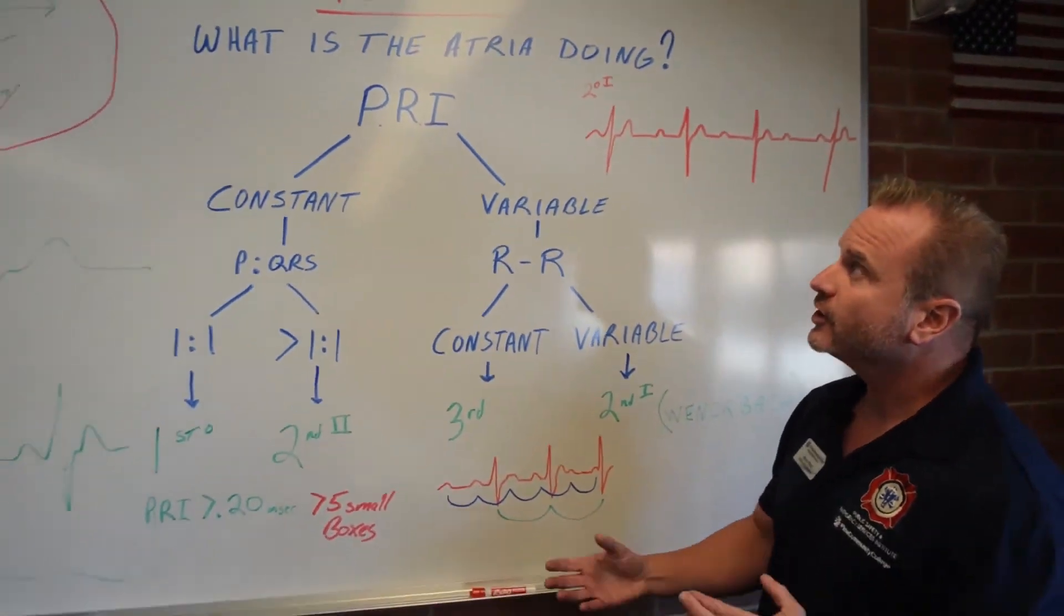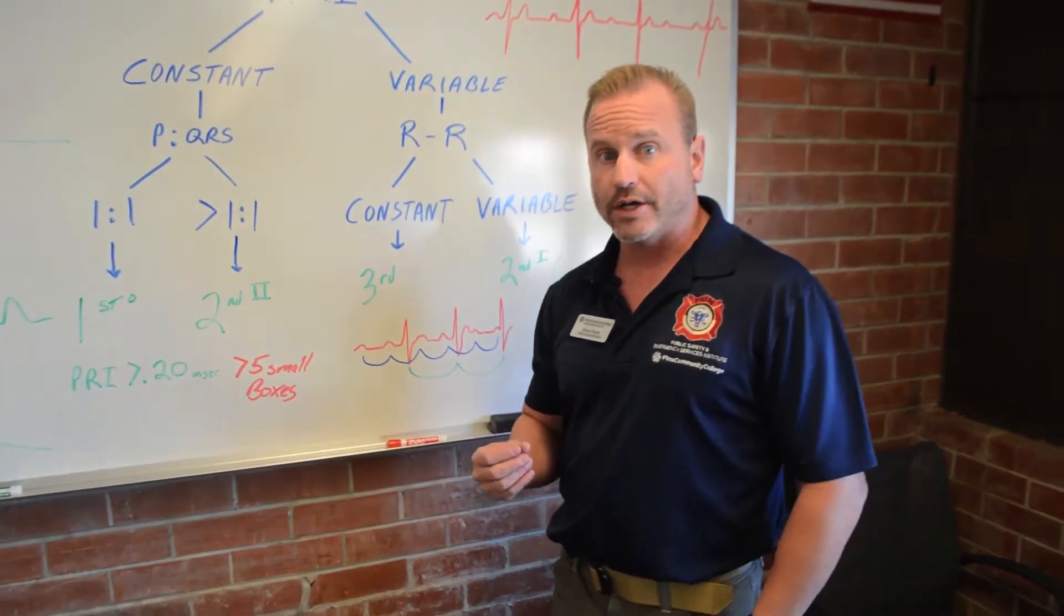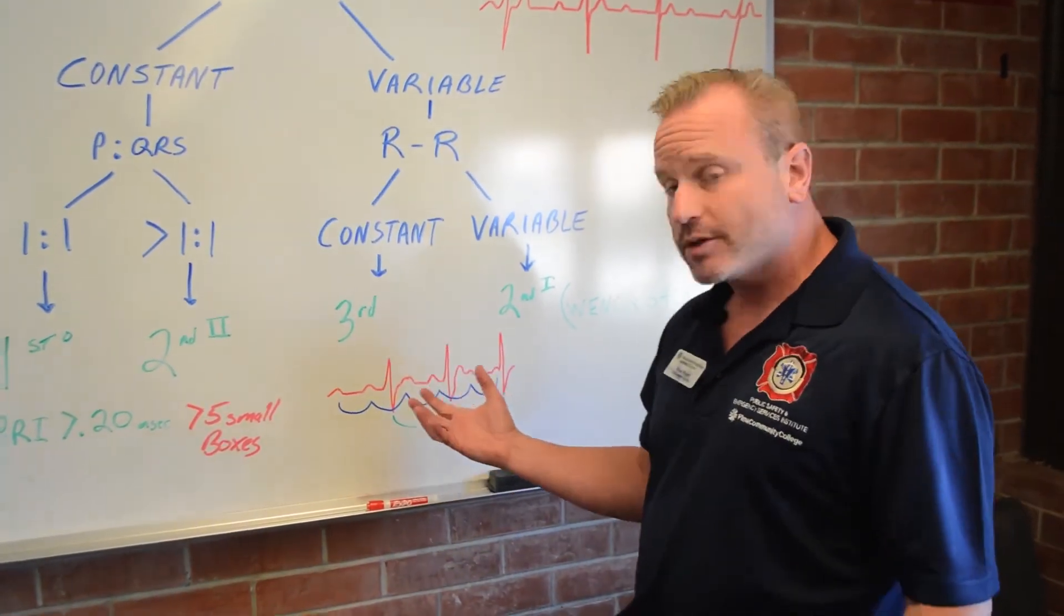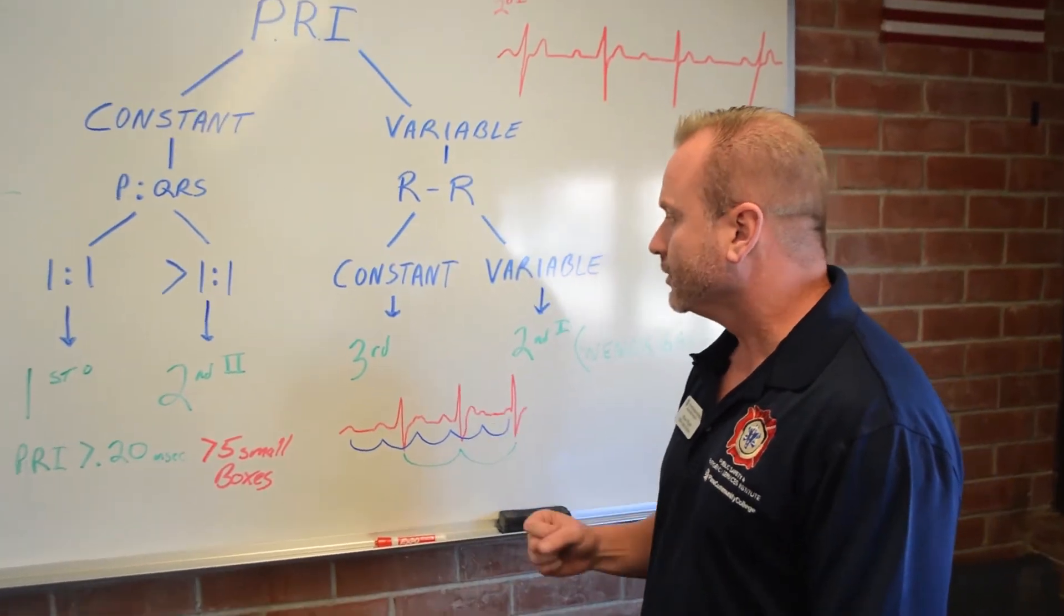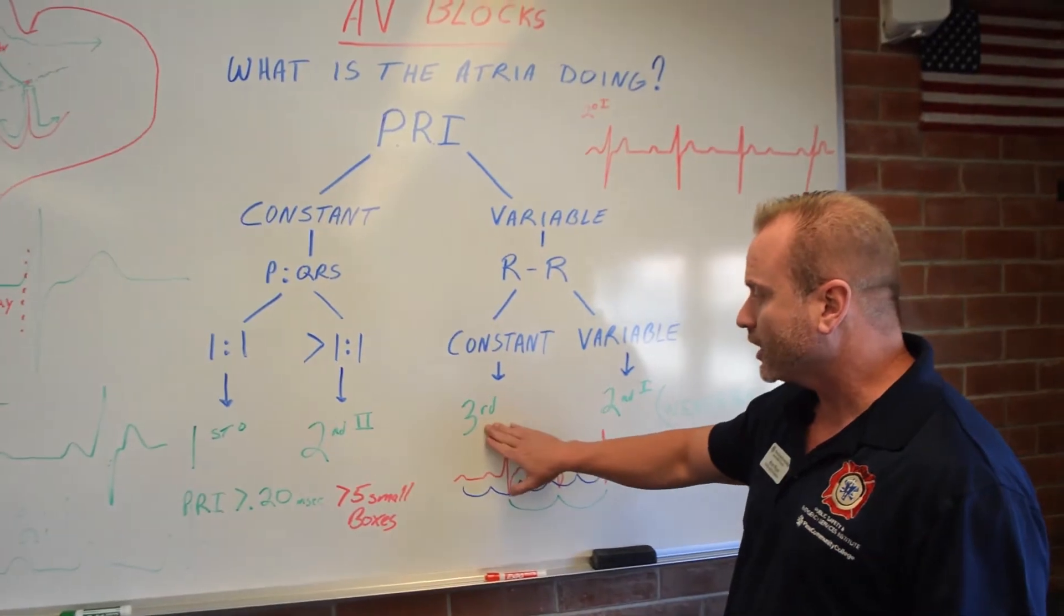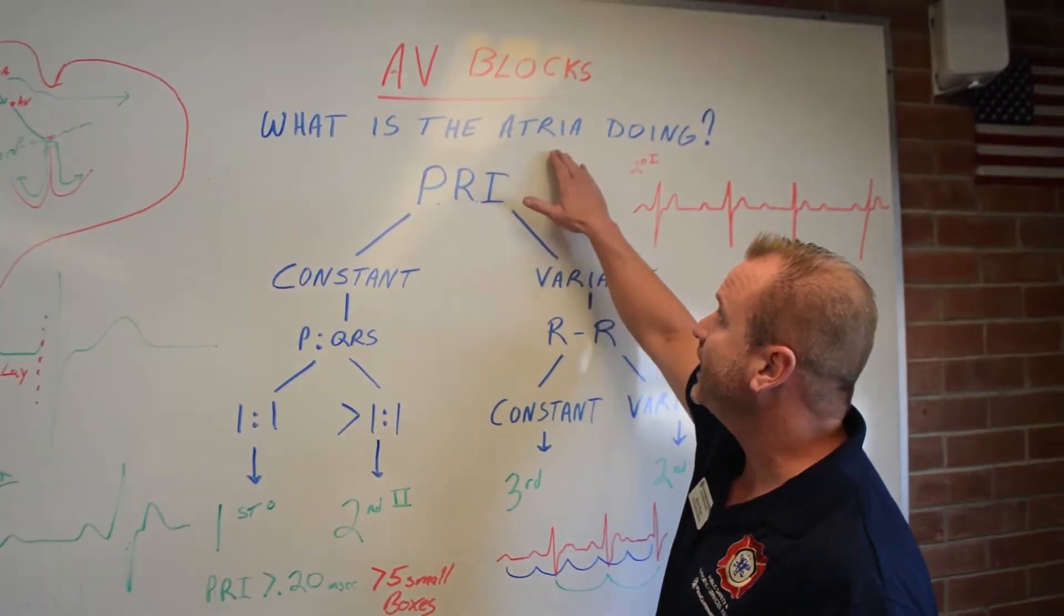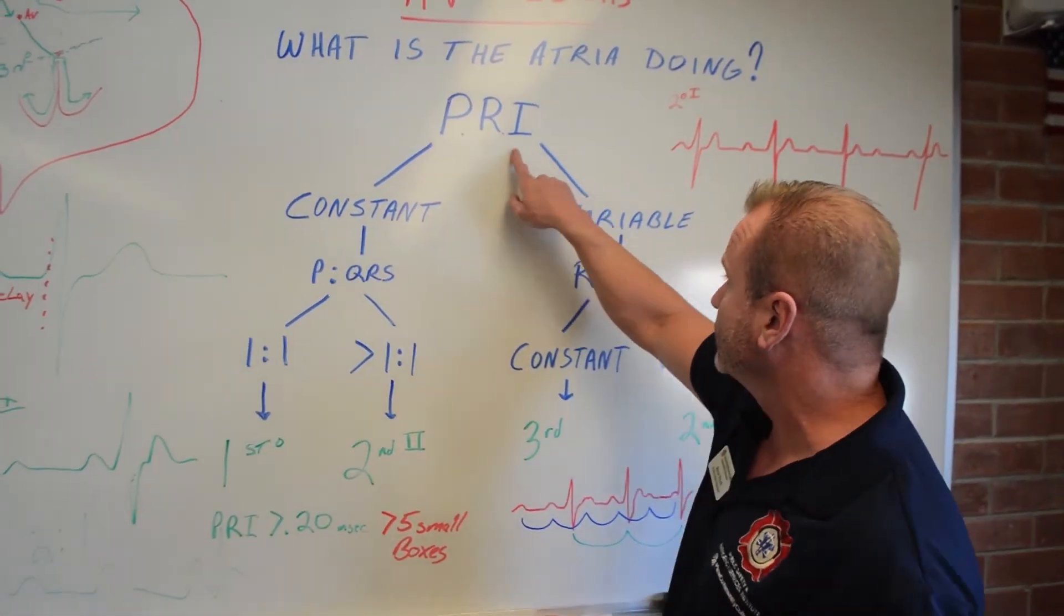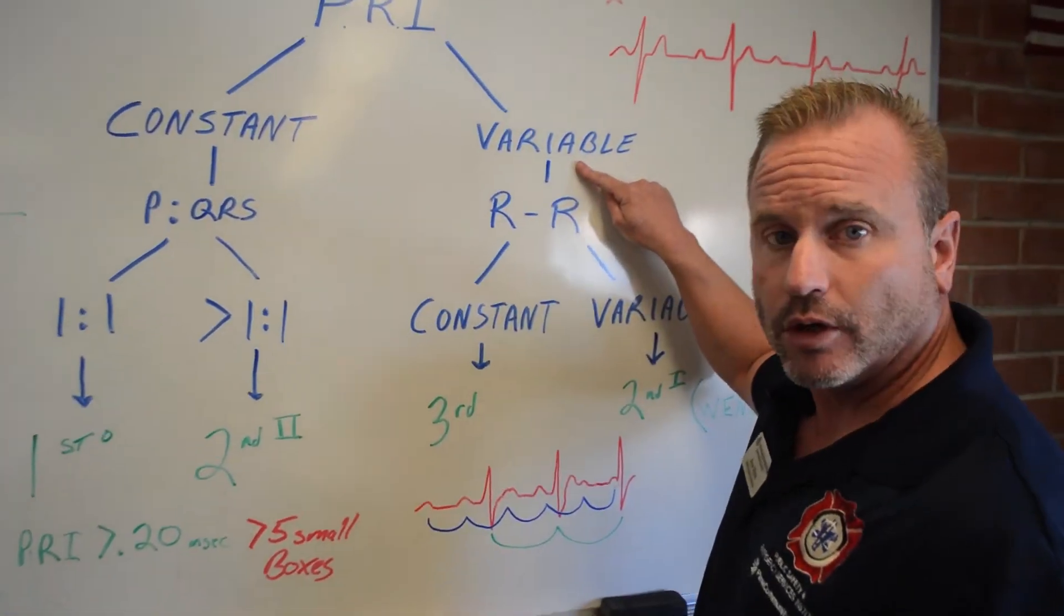Alright guys. So finishing up our blocks, we're now on third degree, third degree AV block or known as complete heart block. That doesn't sound good. But believe it or not, some people live in these blocks. So how are we going to decipher this one? In my opinion, this is one of the easiest ones to ever memorize. Once again, we're talking about a block. We go right back to the fundamentals. What is the atria doing? What is my PRI? What's my PR interval?